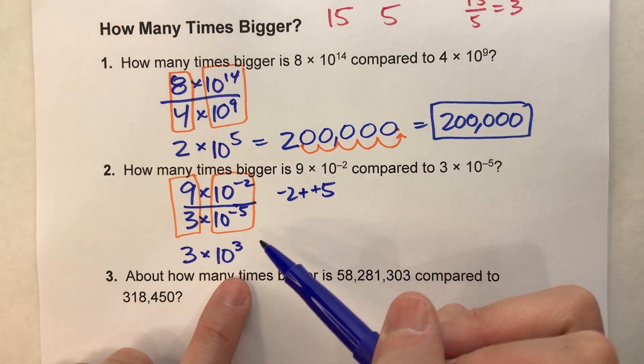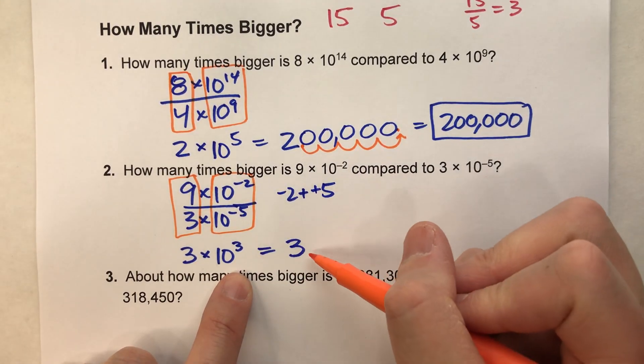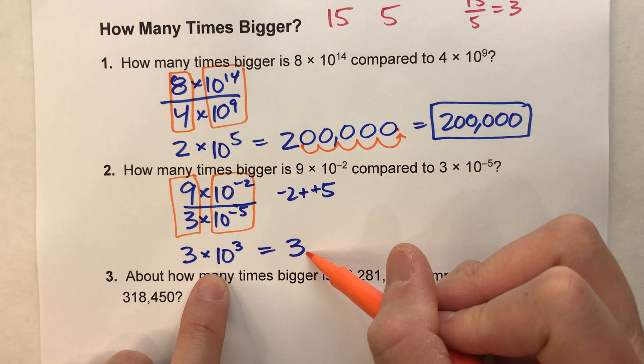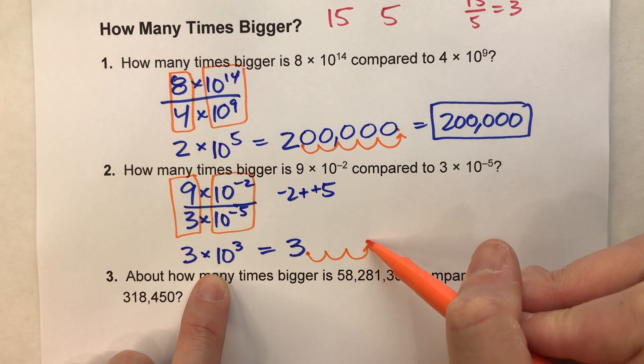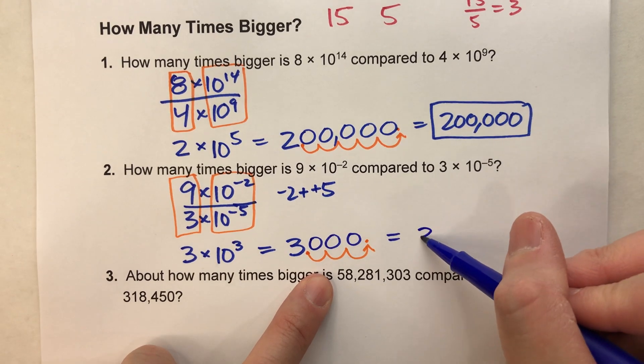So we really get 3 times 10 to the third power, which, again, when you multiply by tens, you're just moving the decimal point over, in this case, 3 times. So 3.0 becomes 1, 2, 3, and fill these in with zeros, this becomes 3,000.